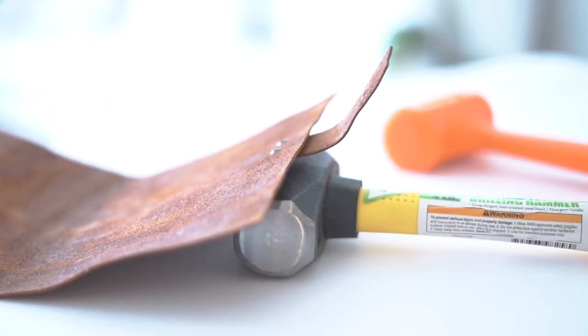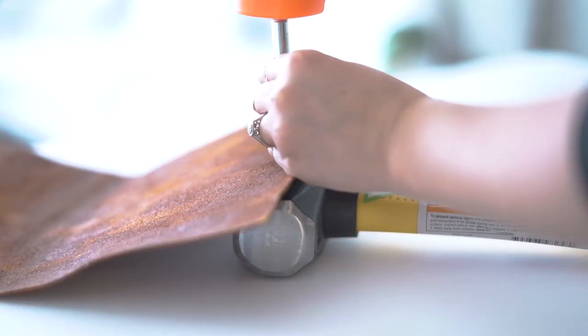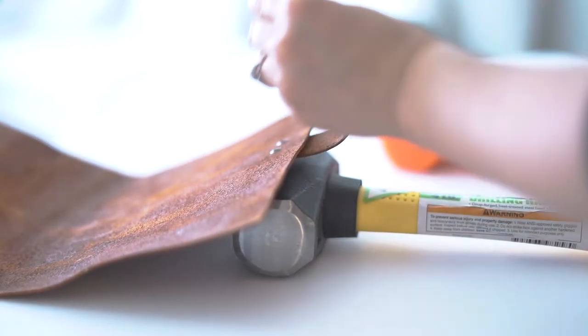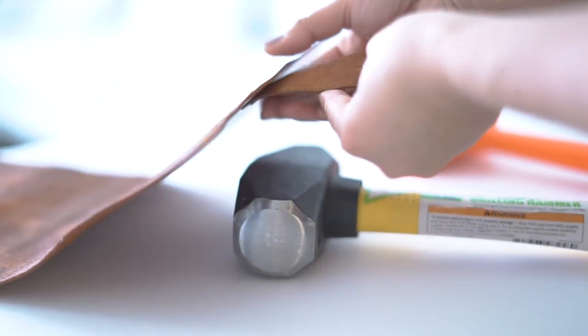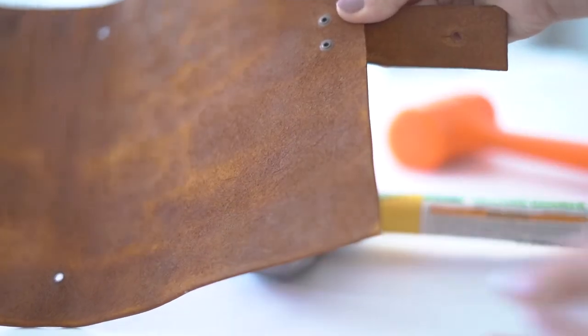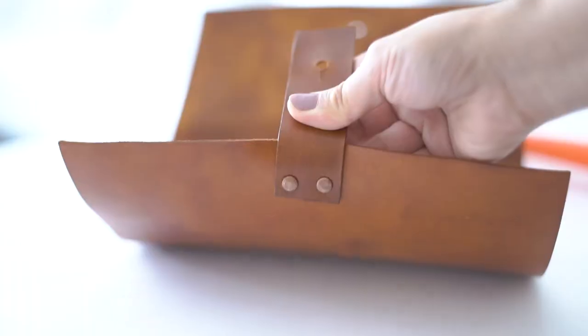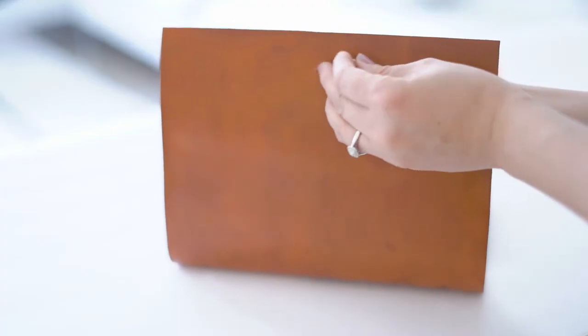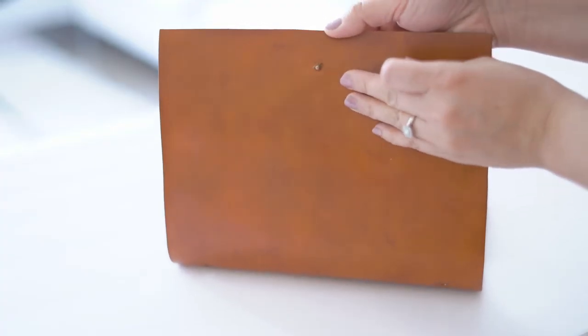Make sure to pound it on this side instead of the decorative side as shown here. Add your button stud and its screw back like so.